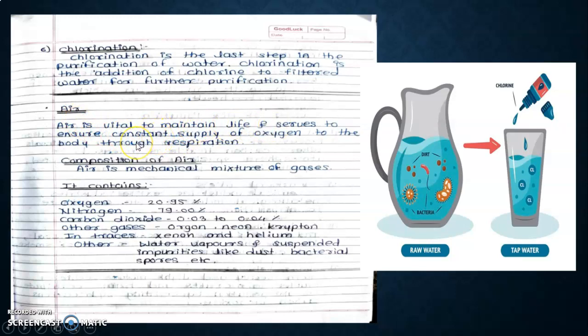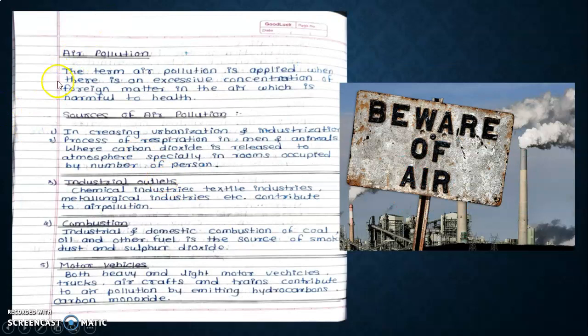Air is vital to maintain life and serves to ensure constant supply of oxygen to the body through respiration. Composition of air: air is a mechanical mixture of gases containing oxygen 20%, nitrogen 79%, carbon dioxide 0.03 to 0.04%, other gases like argon, neon, krypton, helium, water vapor, and suspended impurities like dust and bacterial spores. The term air pollution is applied where there is an excessive concentration of foreign matter in the air which is harmful to health.